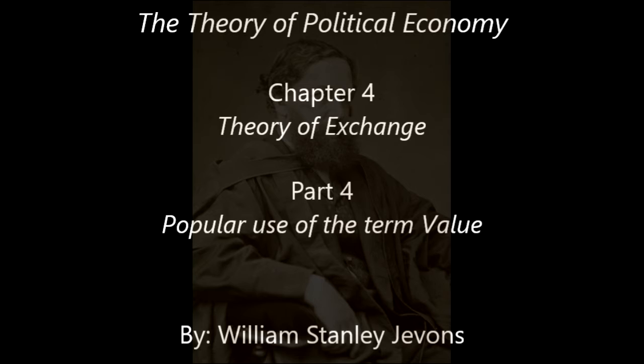In exchange for a diamond we can get a great quantity of iron, or corn, or paving stones, or other commodity of which there is abundance, but we can get very few rubies, sapphires, or other precious stones. Silver is of high purchasing power compared with zinc, or lead, or iron, but of small purchasing power compared with gold, platinum, or iridium. Yet we might well say, in any case, that diamond and silver are things of high value.